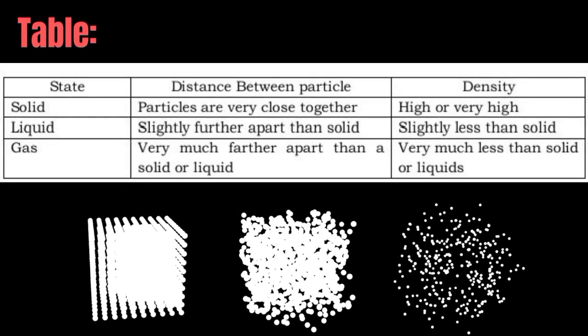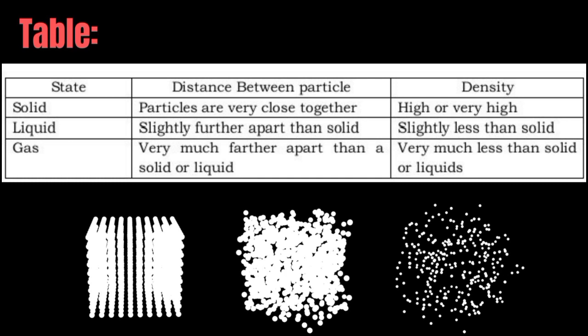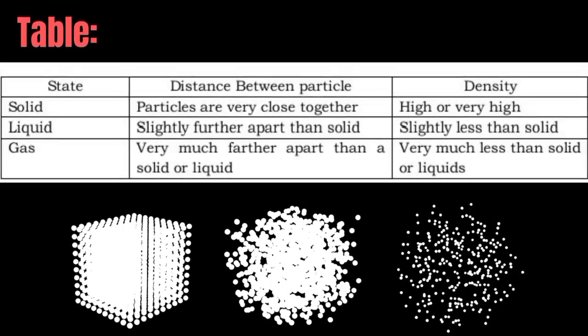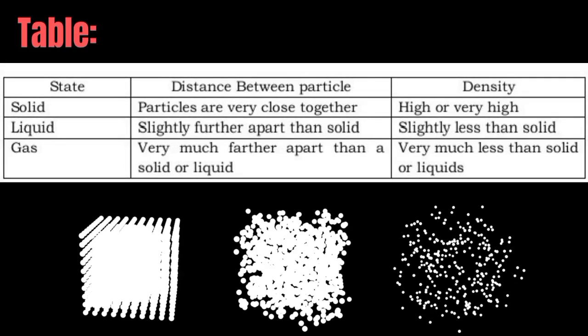The particles of a solid are very close together, so its density is high or very high. In a liquid, the distance between particles is slightly farther apart than in a solid, and its density is slightly less than that of a solid. In a gas, the distance between particles is much farther apart than in a solid or liquid, and its density is very much less than that of a solid or liquid. The difference between the densities of solids, liquids, and gases is due to the distance between particles in each state of matter.